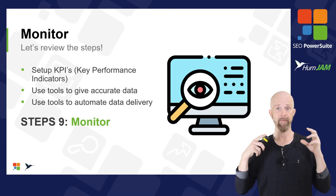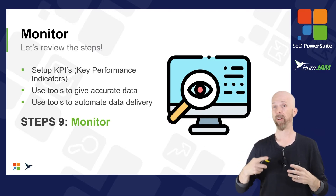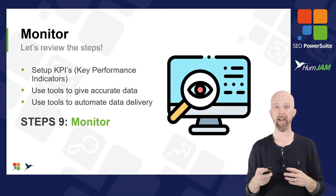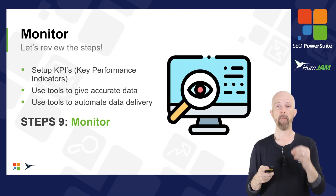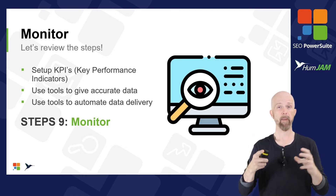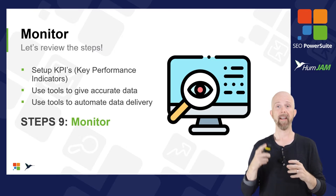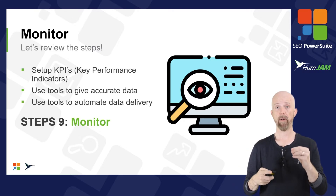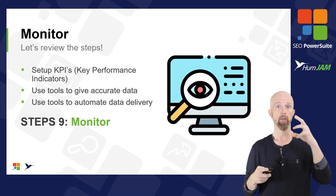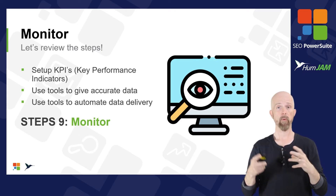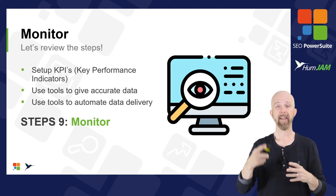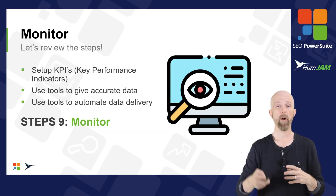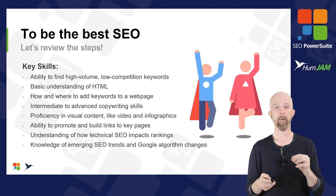You don't improve what you don't measure, so you want to make sure we set everything up properly for monitoring. You need your key performance indicators — you need to know what you're looking to monitor: what your SERP location is, what you're ranking, what your competitors are ranking for, how many backlinks you have, and what the things are that you're wanting to monitor. That's step number nine.